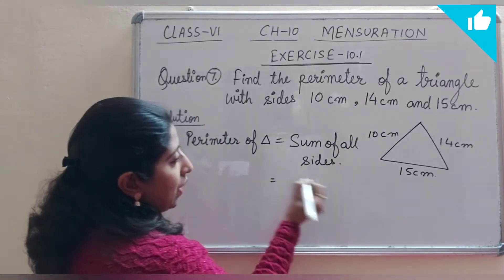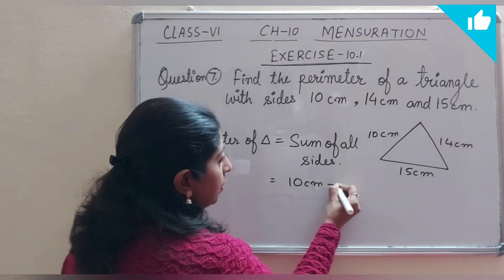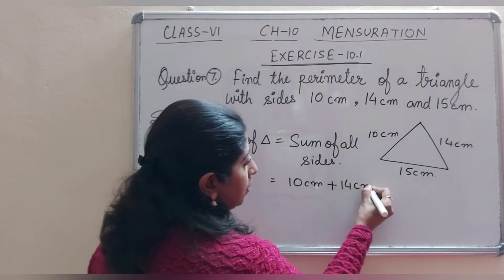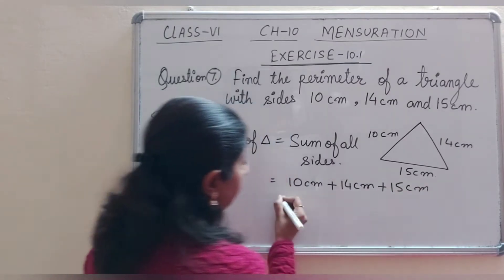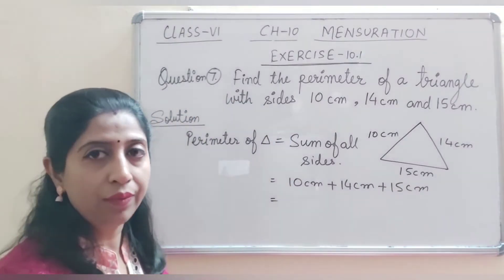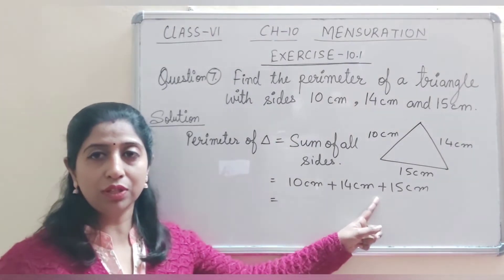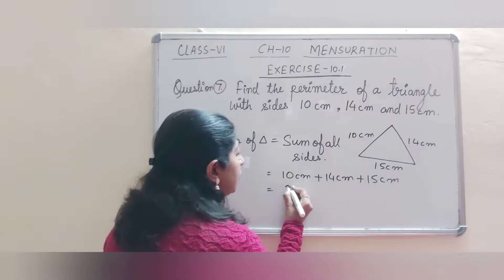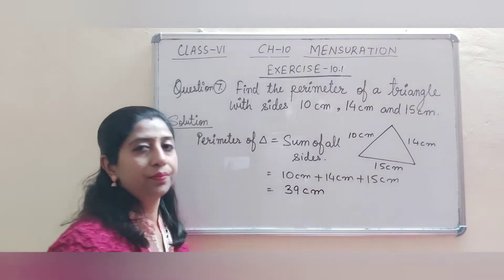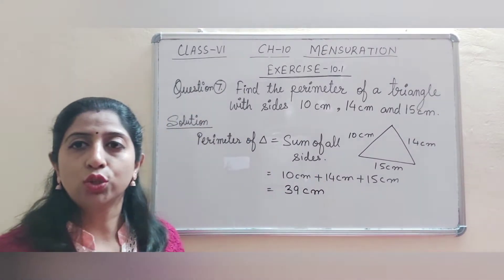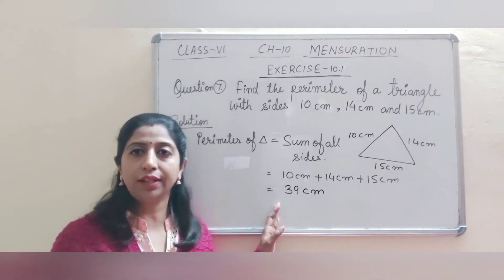So we have to add the sides: 10 cm plus 14 cm plus 15 cm. On adding all these three numbers, we will get 39 cm. So the perimeter of this triangle is 39 cm.